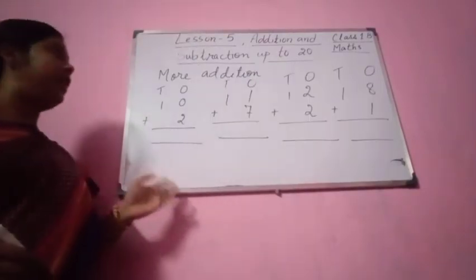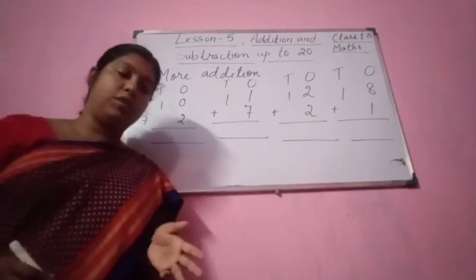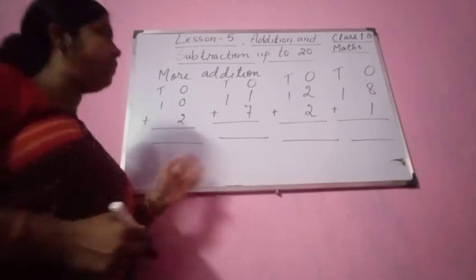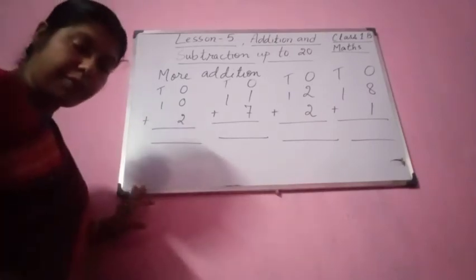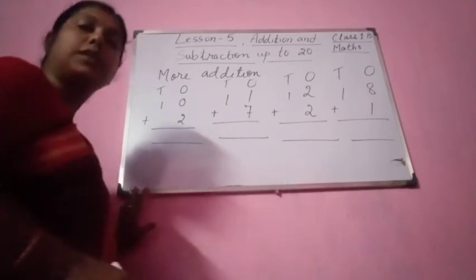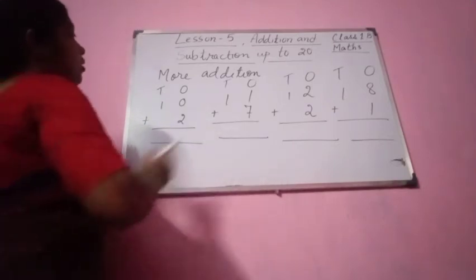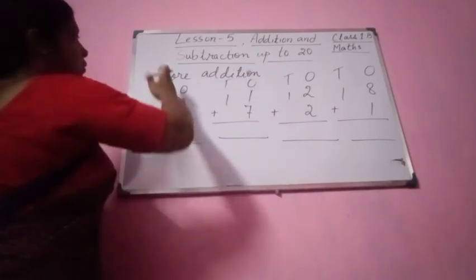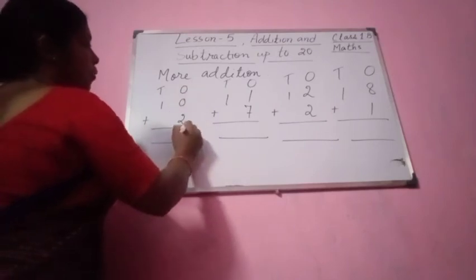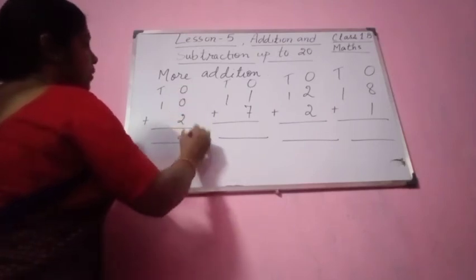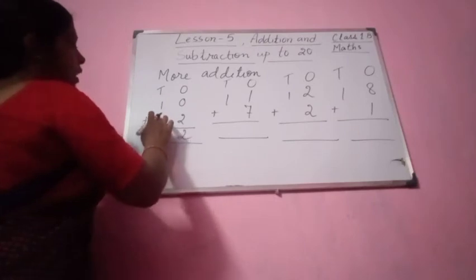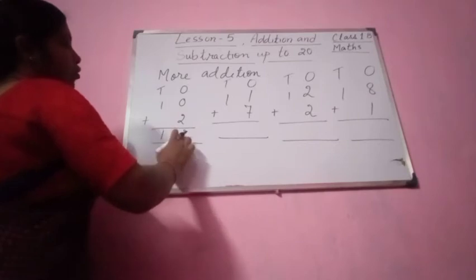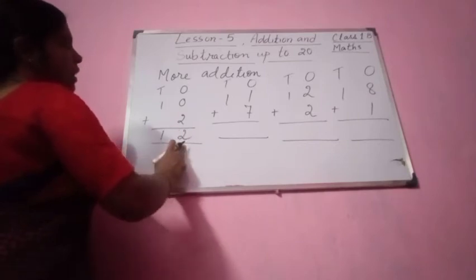Now see students, we are adding — more addition we are doing. Some sums are here on page number 58: add and write the numbers as shown. Here I have written 10s and 1s everywhere. This is 1s, this is 10s. 0 plus 2 equal to how much? 0 plus 2 will be 2, and 1 will come down because underneath 1 there is nothing. 0 plus 2 will be 2 and 1 will come down. So 12 is the answer — 1 ten and 2 ones.